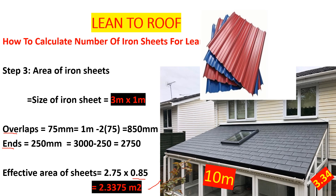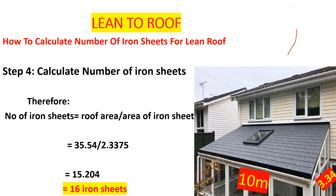Now that we have the area of the iron sheets and we have the roof area, we can calculate the number. The number of iron sheets will be the roof area divided by the effective area of the iron sheets. The roof area was 35.54 and our iron sheet effective area is 2.3375. If we divide, we get 15.204, giving us 16 iron sheets. So that area will require 16 iron sheets. That is how we calculate the number of iron sheets for a lean-to roof.